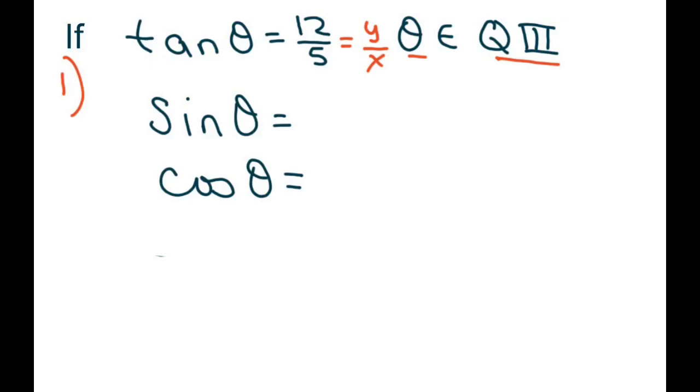So basically we know if our angle is in quadrant 3, that means both our x and our y are both negative. Now it says positive here, but two positives make a negative. So you could say that this is really negative 12 and negative 5.